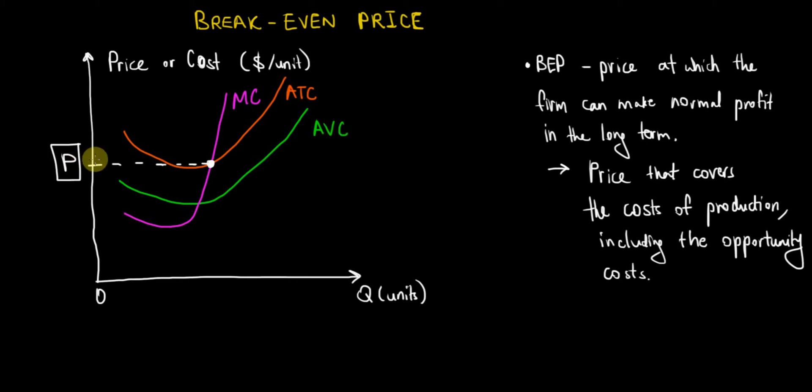We can have it when the price is equal to the average total cost. In that sense, per unit, when you deduct the cost of production on average from the price that you get in return, you're left with nothing in terms of economic profit.